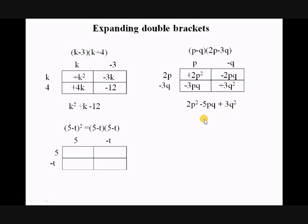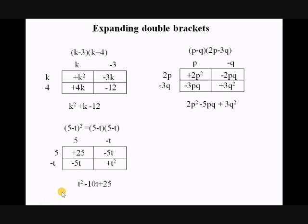Here's another example like the squared one shown before: (5 minus t) squared means (5 minus t) times (5 minus t). I fit it into the grid and start multiplying: 5 times 5 is 25, minus t times 5 is minus 5t, again minus t times 5 gives minus 5t, and minus t times minus t gives plus t squared. Simplifying those two middle terms gives minus 10t, so my answer is t squared minus 10t plus 25, which I could also write as 25 minus 10t plus t squared.